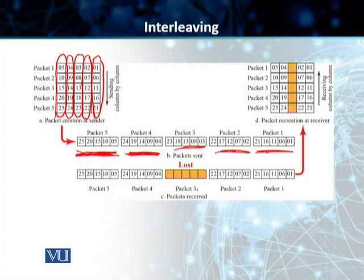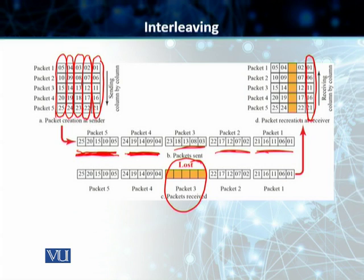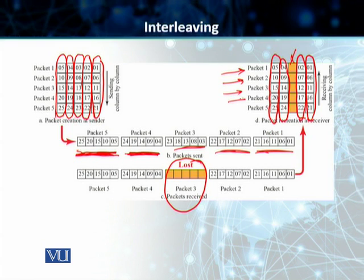On the receiving end, once this is received, let's suppose one of our packets is lost. Although we have lost the full packet, when you arrange this back on the receiver side column by column in the vertical format, packet one will go back like this, packet two will go back like this, packet three is lost, packet four goes back like this, and packet five goes back like this. So essentially you are not missing a full packet — you are only missing one chunk out of each of those five packets, and it is easy to reconstruct the data at the receiving end using chunk interleaving.